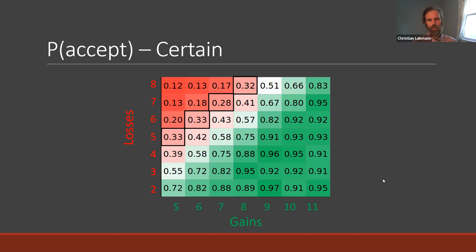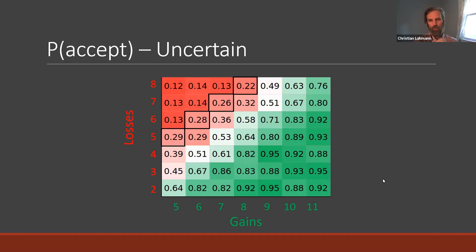In the certain condition, people are in fact loss averse — the diagonal gambles with zero expected value were taken less than 50% of the time, consistent with loss aversion. In the uncertain condition, people are less likely to take all of these gambles compared to the certain condition. We estimate a standard parameter to quantify loss aversion: losing a dollar in the certain condition feels like losing $1.24, while in the uncertain condition it feels like losing $1.40. This design had all subjects making all choices, so all estimates are within-subjects and quite reliable.